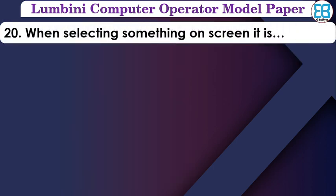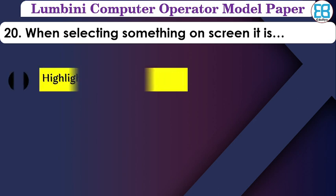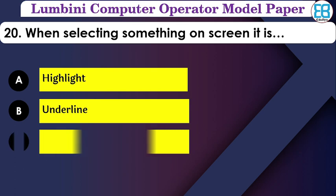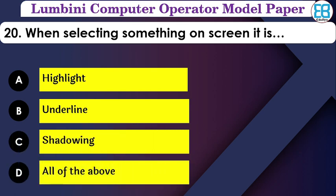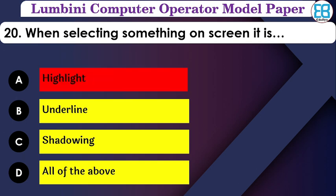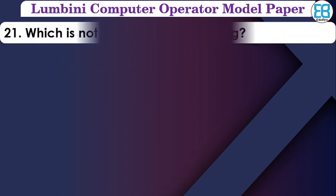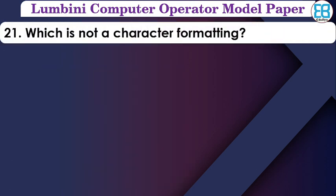When selecting something on a screen, this is called what? The options are: highlight, underline, select. The correct answer is highlight — when you select something on screen, it is highlighted.